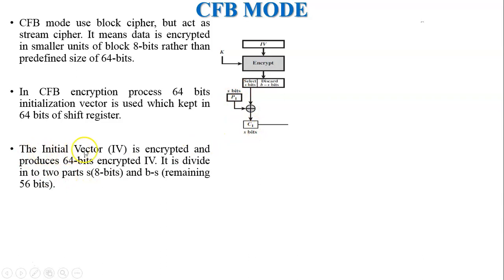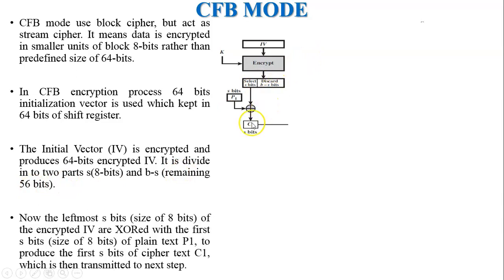The initial vector is encrypted. The encryption output is divided into two parts: s equals 8 bits and b minus s equals 56 bits. XOR with P1 generates cipher text C1.